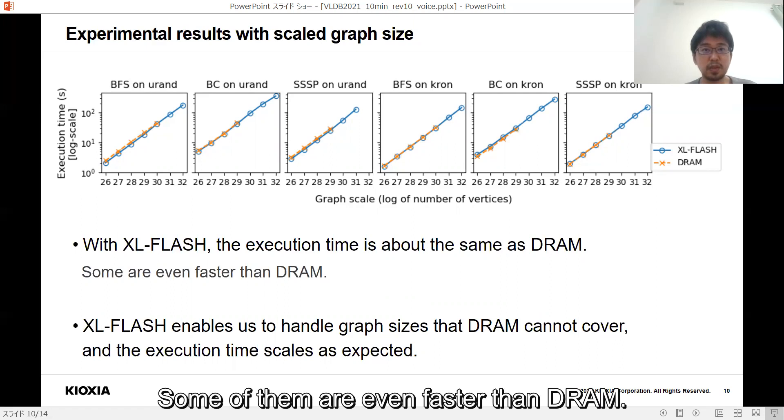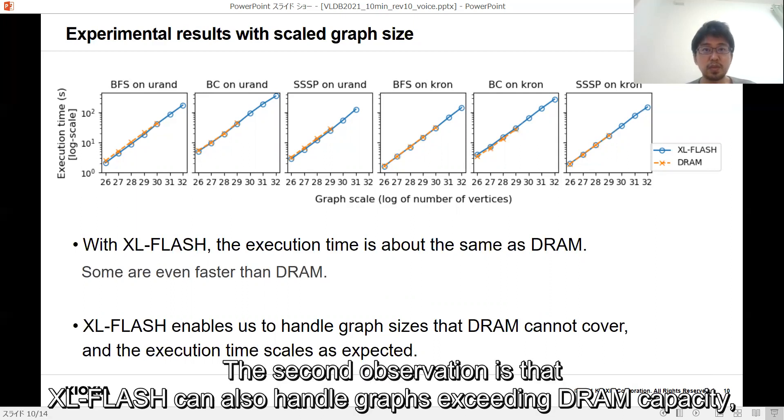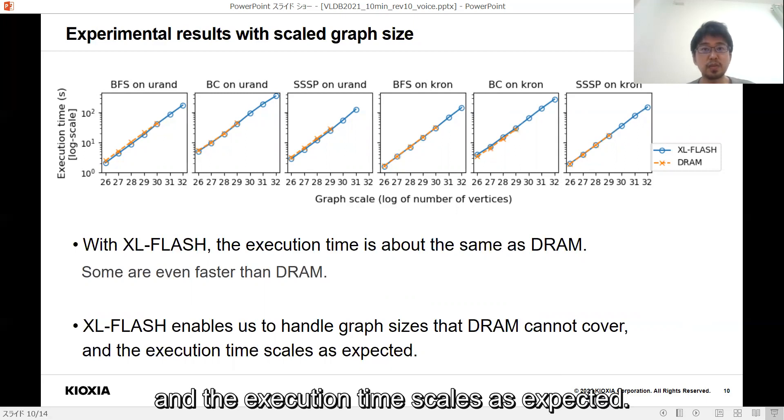Some of them are even faster than DRAM. This is because the proposed access method is as fast as or faster than DRAM access in terms of CPU overhead. The second observation is that XL-FLASH can also handle graphs exceeding DRAM capacity, and the execution time scales as expected.